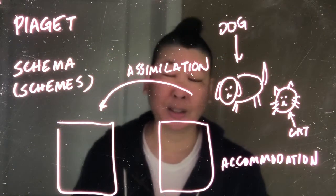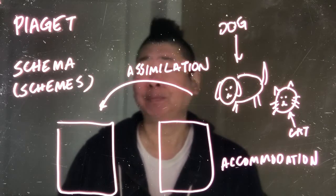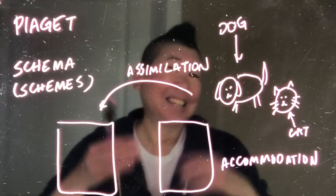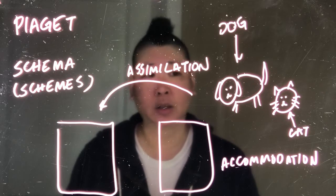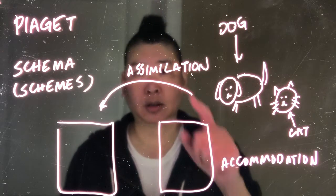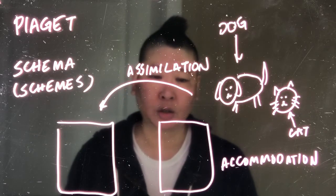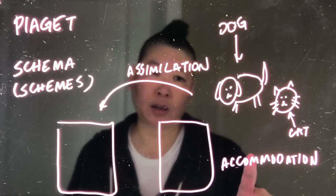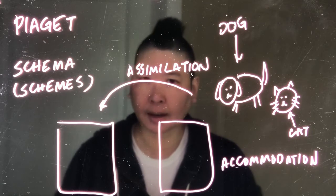And your responsible adult says, oh, honey, no, that's not a dog, that's a cat. In all actuality, what's happening is as a child, you are trying to take the new information and put it in an existing schema, that's assimilation. And your adult is trying to help you with accommodation or creating a new category for cat that is separate from dog.